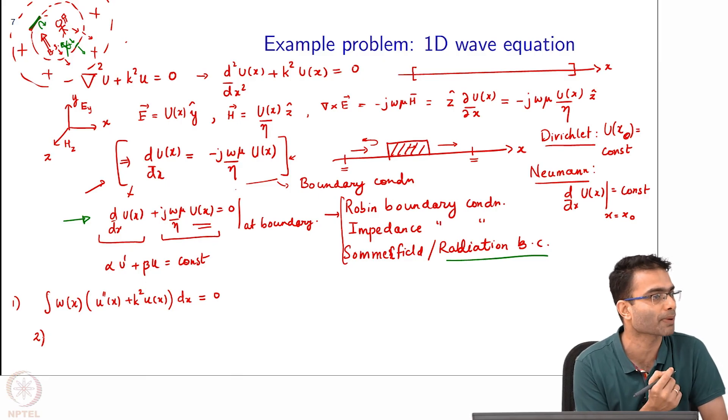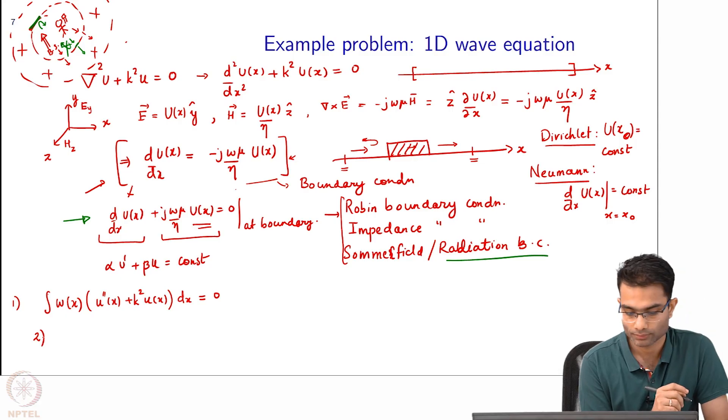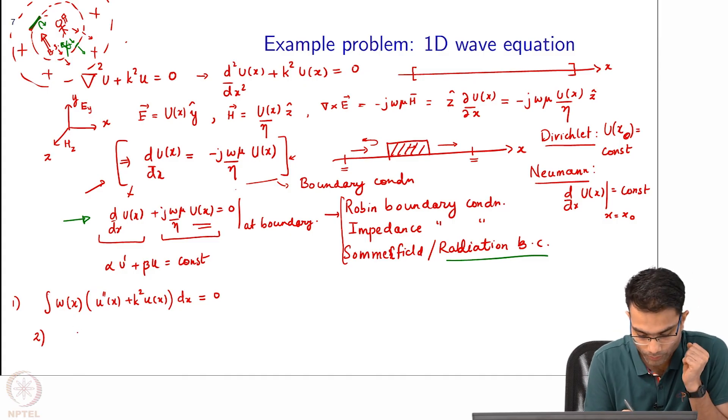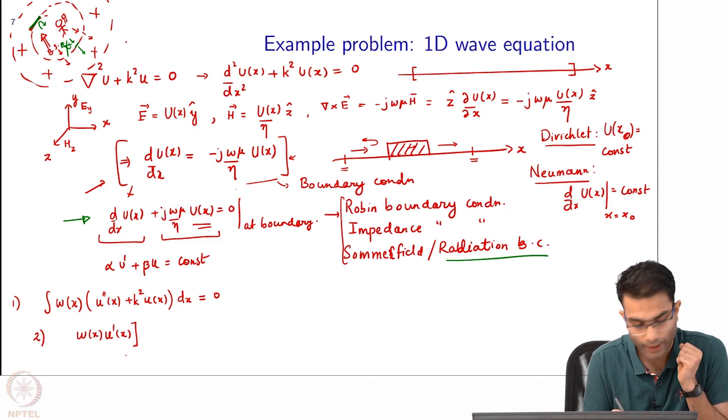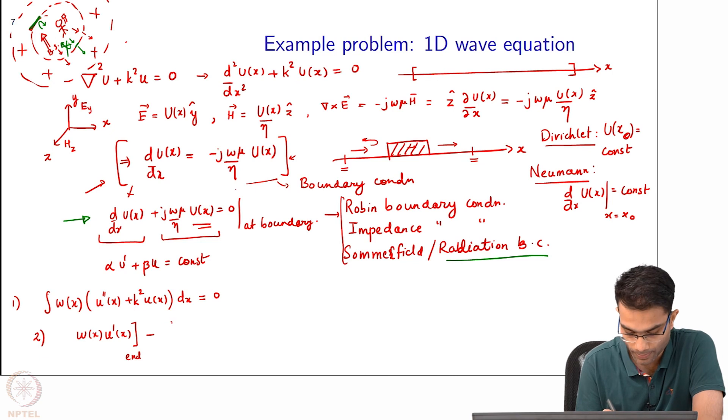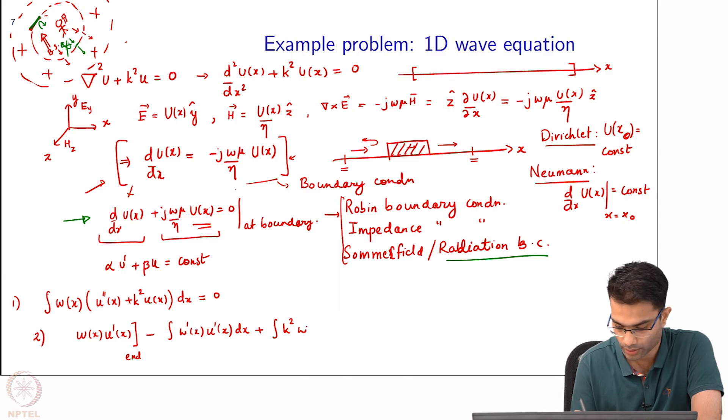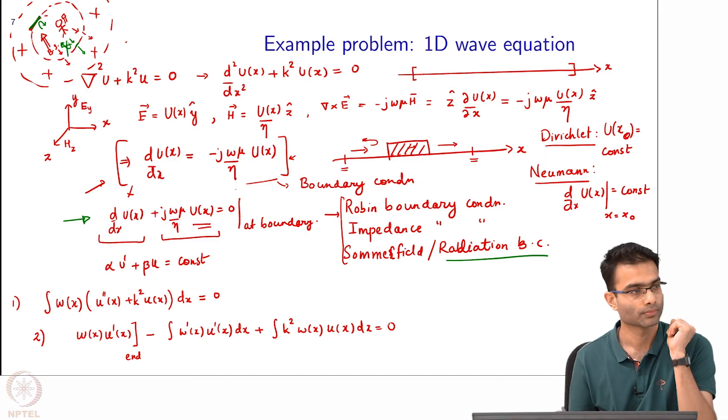Next step, step 2. What do I do next? Converting to weak form. That is basically integration by parts. What do we do now? There is a double derivative term over there, so that can get converted. One integration is going to help me with that. This will become w of x u prime of x at the end points minus integral w prime of x u prime of x dx, plus k squared integral w of x u of x dx equal to 0.